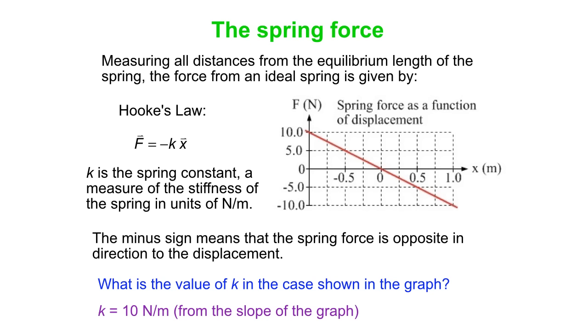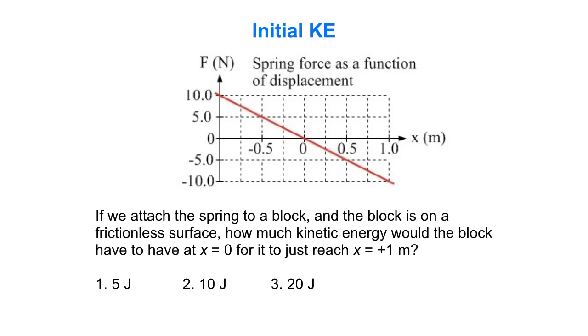So the slope itself is, in fact, minus 10 newtons per meter, but the equation is F is minus kx. So the k itself is just 10 newtons per meter.